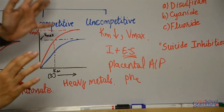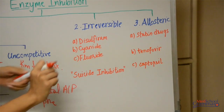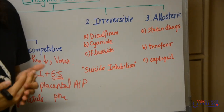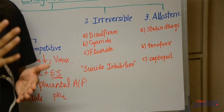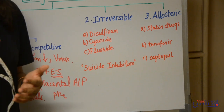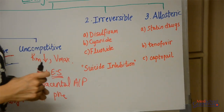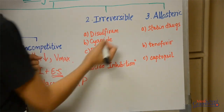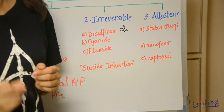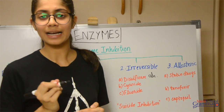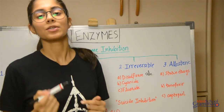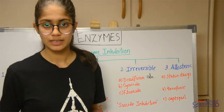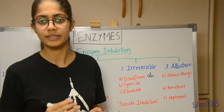So that was reversible inhibition. We move on to irreversible inhibition. Irreversible, as you can see from the name, means that the inhibition cannot be reversed. Once the inhibitor combines with the enzyme, it does not separate again and normal activity does not occur after that. Certain examples of irreversible inhibition include a drug called disulfiram. Disulfiram is used in the treatment of alcoholism — it inhibits the enzyme aldehyde dehydrogenase. Acetaldehyde then accumulates, which makes the person feel sick and leads them to alcohol avoidance. That's why disulfiram is used for alcoholism treatment.